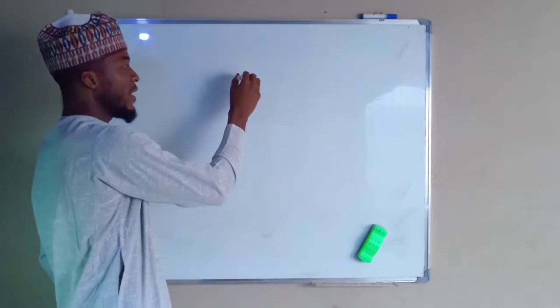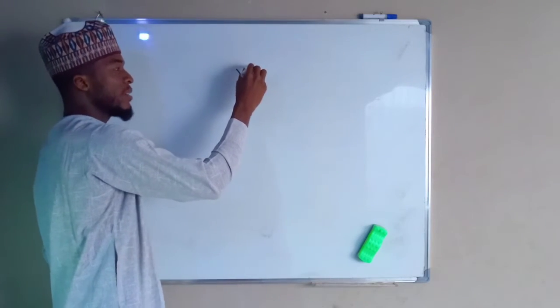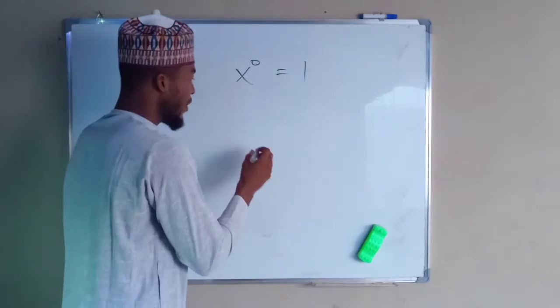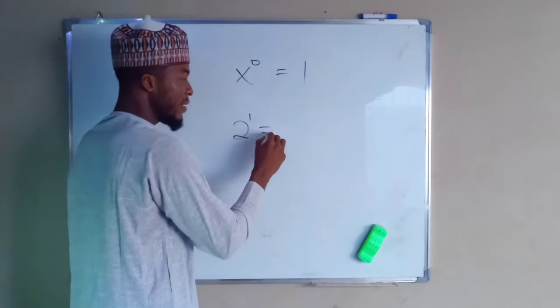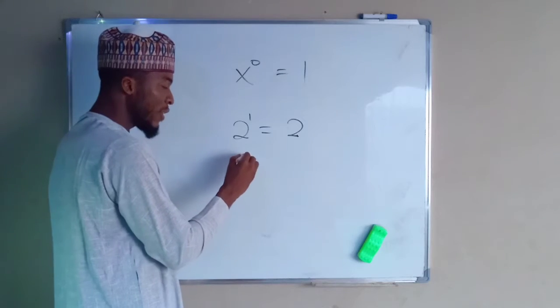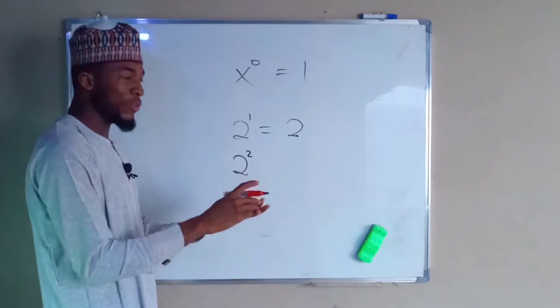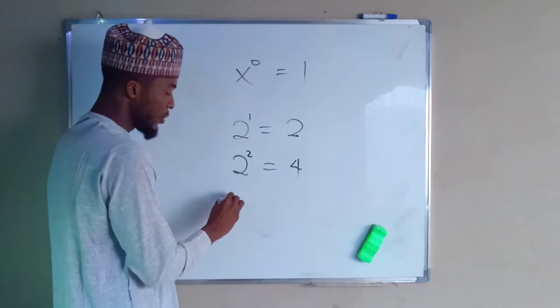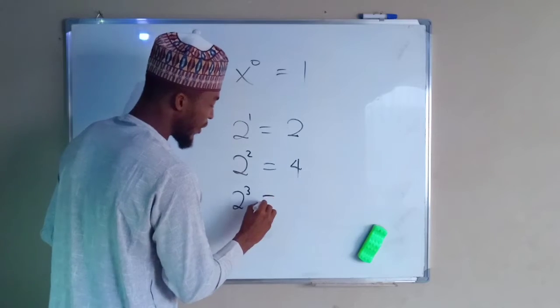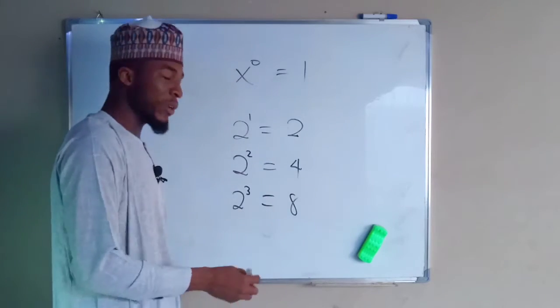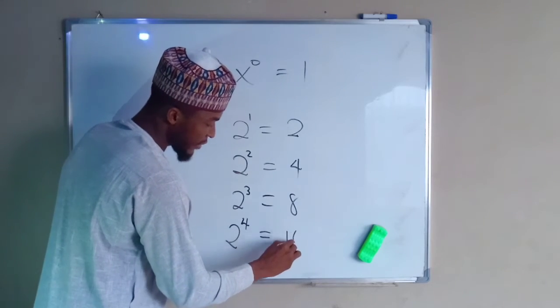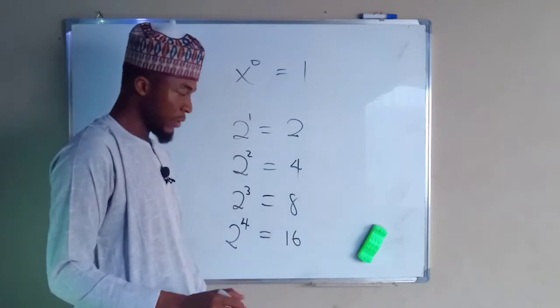Lots of indices again, we learned that a number raised to the power of 0 is equal to 1. Why is this so? We all know that 2 to the power of 1 is the same thing as 2. 2 to the power of 2 is the same thing as 2 times 2, which is equal to 4. 2 to the power of 3 is the same thing as 2 times 2, 4 times 2 is equal to 8. And so on and so forth. This is 16.